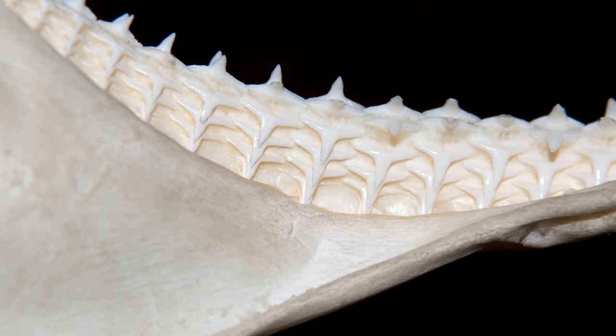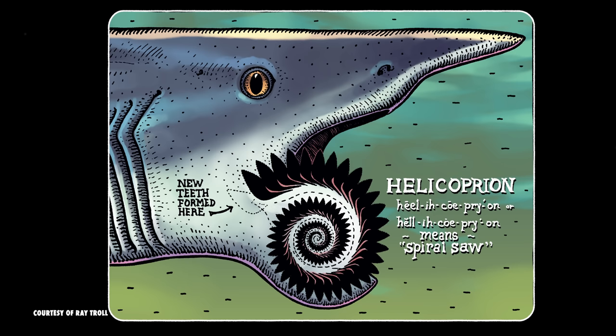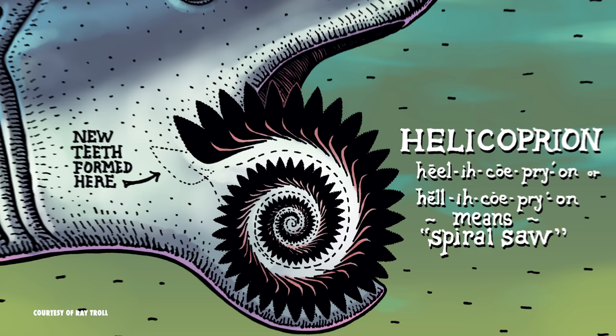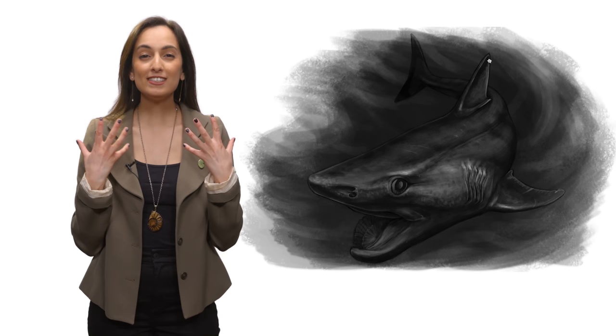Unlike modern sharks, which have rows of parallel teeth on either sides of their upper and lower jaws, Helicoprion only had teeth on the bottom, and they were produced in a little tooth factory at the back of the jaw near where the upper and lower jaws meet. These teeth grew forward along the midline of the mouth, where you'd expect the tongue to be like a dental conveyor belt, and thick cartilage supported the tooth whirl on either side.